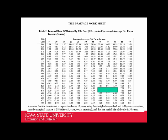Another way to evaluate it is the internal rate of return. Looking at $525 as the tile cost and $45 net increase in income, that yields a 6.61% internal rate of return. Even with those relatively low prices on corn and soybeans, it seems that tile is going to pay.